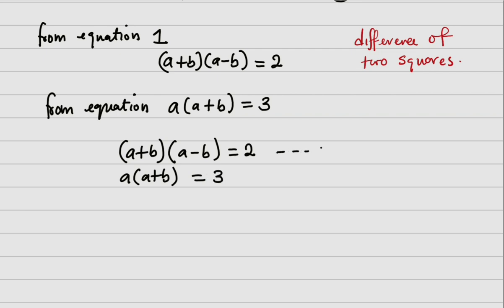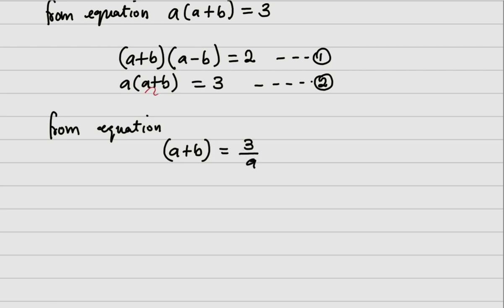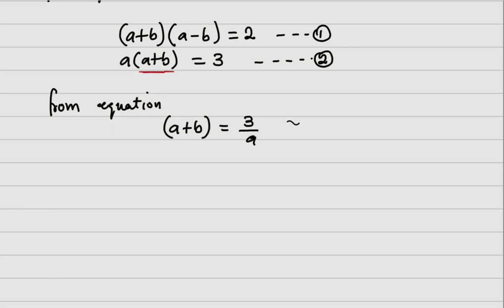Recall, this has not changed — this is still equation one and this is equation two. Again, from equation two, I can now rearrange it as: (a + b) equals three over a. What I did is make (a + b) the subject of the formula. I have it this way — let me call this equation three.